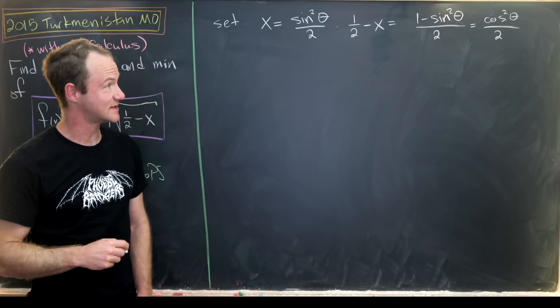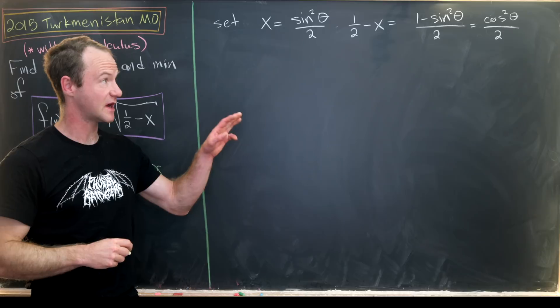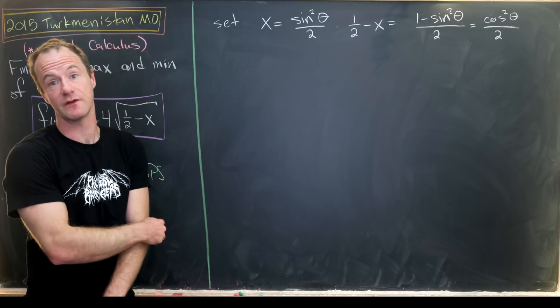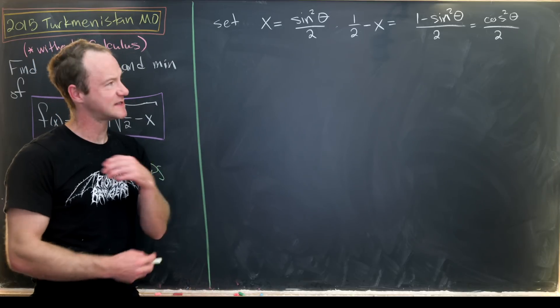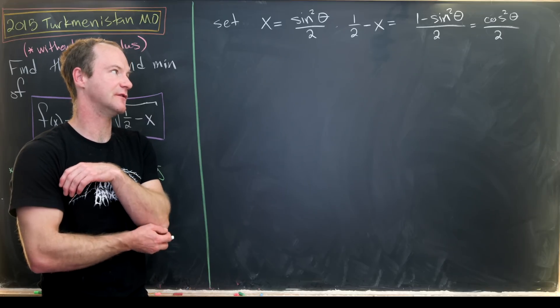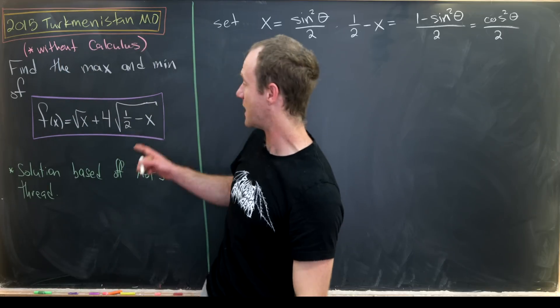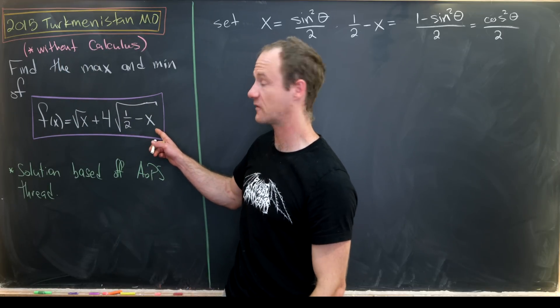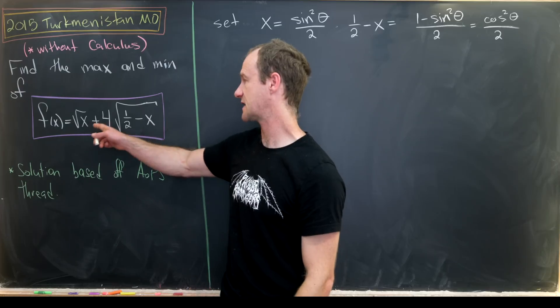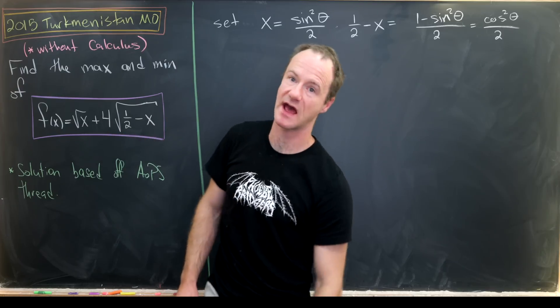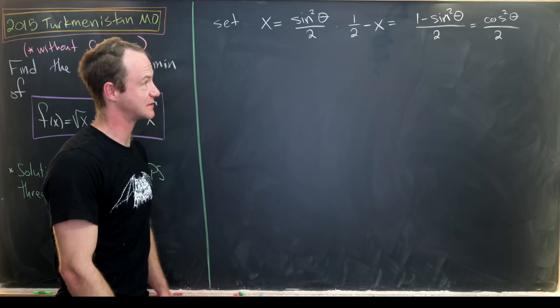And that actually makes this a lot easier to work with because we take the square root of the cosine squared and we get the cosine. And you might say, well, we really get the absolute value of the cosine. But because of the domain restriction that's put on this function in the first place, x has to be between 0 and 1 half, we don't have to worry about an absolute value there.